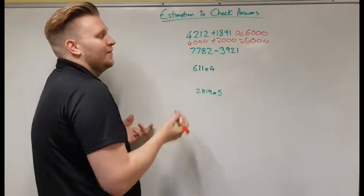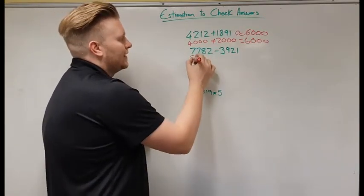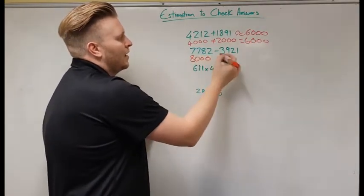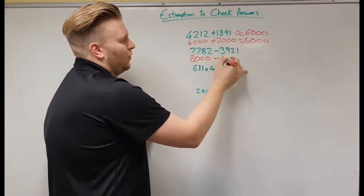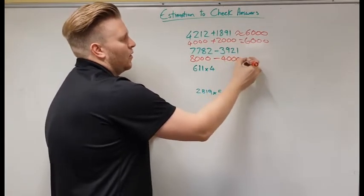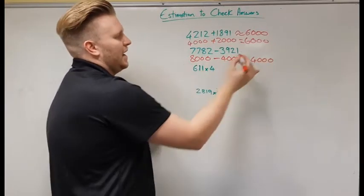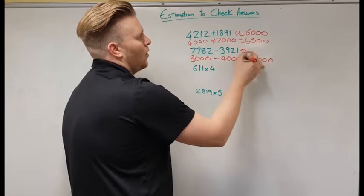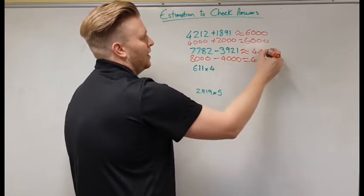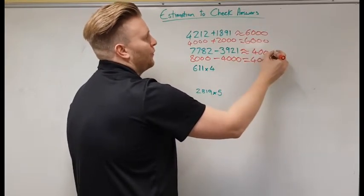Same would work with takeaway. So I've got 7,782. I'm going to round that to 8,000. And I'm going to take away, that's closer to 4,000. Easy sum. I just take 4,000 away from 8,000. So I know that answer is going to be around 4,000.